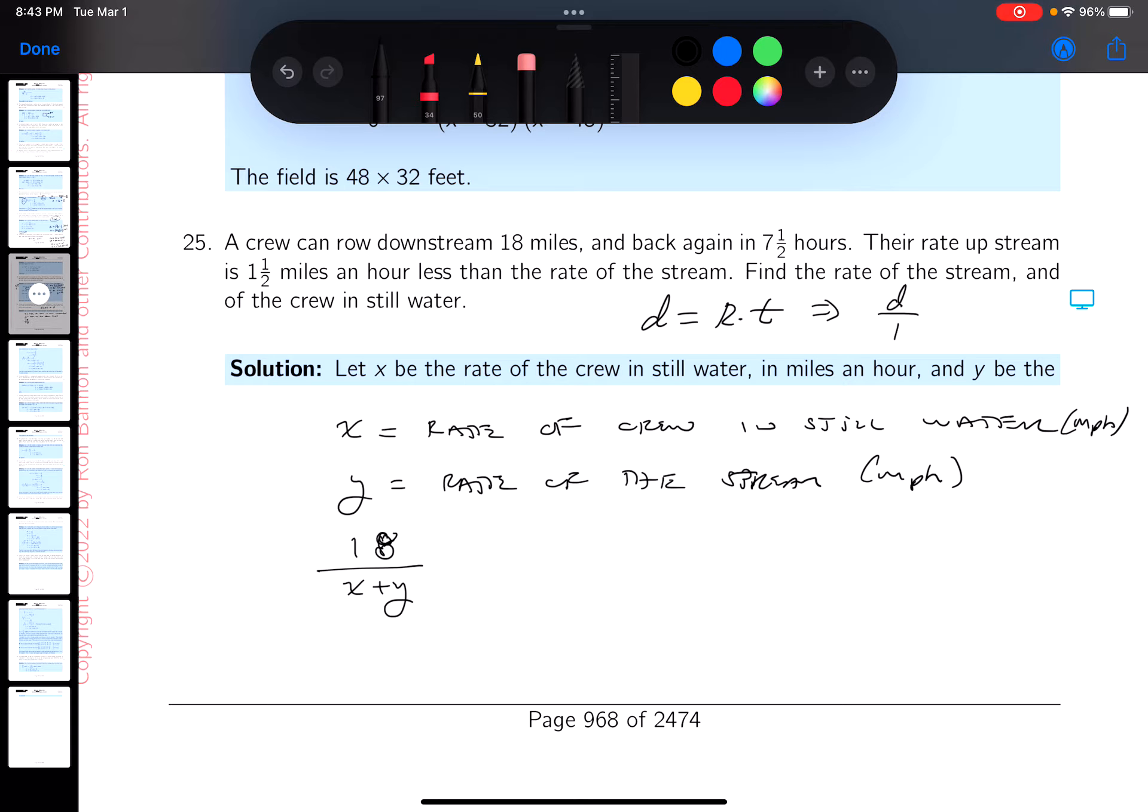Distance divided by rate is time, and he's got to go back against the stream, so X minus Y, and that would equal the total time which is 7.5 hours.